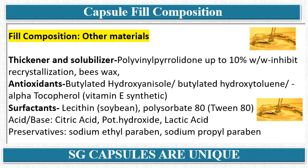PVP can be used up to 10% to inhibit recrystallization of the API and increase the solubilizing capacity of the fill material. Wax can be used as a suspending agent, and hard fat is also used. Antioxidants include BHA, BHT, and alpha-tocopherol, which are common antioxidants in the pharmaceutical field. Surfactants like lecithin are widely used in soft gel formulations, along with polysorbate 80 (brand name Tween 80). Sometimes acids and bases like citric acid, potassium hydroxide, and lactic acid are used. Preservatives include sodium methylparaben and sodium propylparaben.